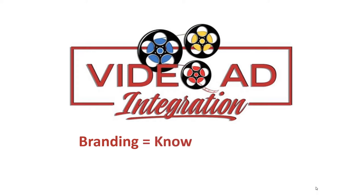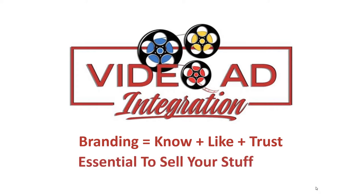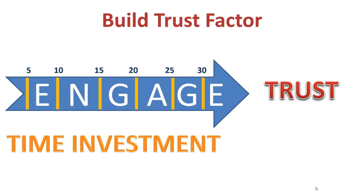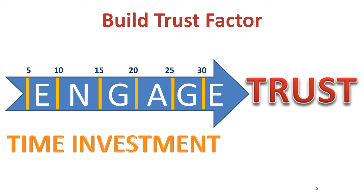Branding equals know, plus like, plus trust — three vital components to make someone buy your stuff. With video integration, your target audience gets to see a lot of your videos. The more time they invest watching your videos, the more engagement they have and the greater trust they have. Once they have that trust, they will spend money with you — they will buy your stuff. But you have to have the trust first.